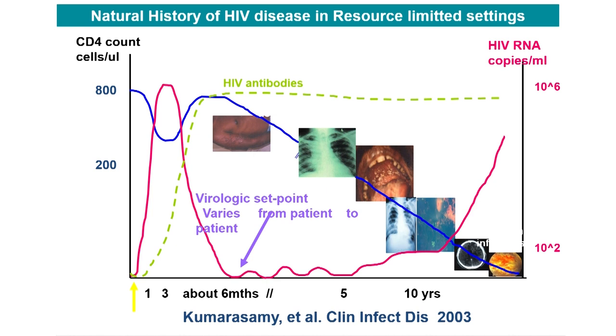Why is this type of research important? Someone who develops HIV is not going to develop problems immediately — it takes years for the CD4 cells to start dropping down. In India, we found that around 500–600 CD4, people can develop skin problems like herpes zoster. When CD4 is around 350–400, they can develop tuberculosis and fungal infections. When CD4 is less than 200, they develop pneumocystis pneumonia. At CD4 of 100, they can develop brain infections. We did this research mainly to educate our doctors.